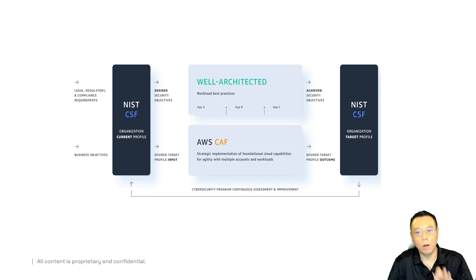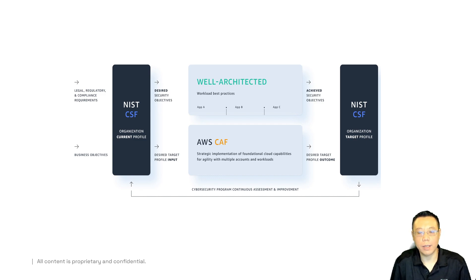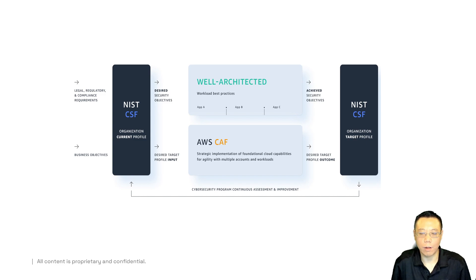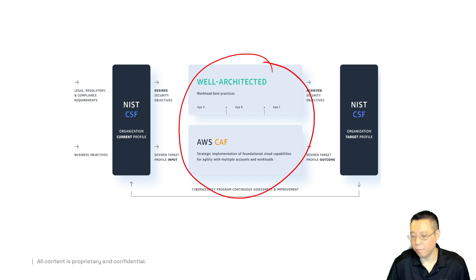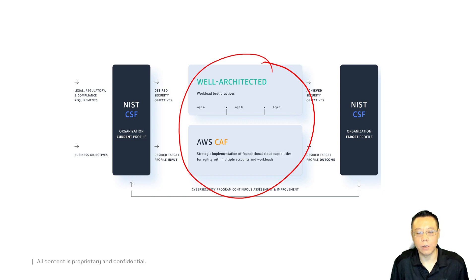If you overlay one framework with the other and you have controls that match up, you should utilize those controls so you can get continuous improvement and continuous integration of that model. Remember that there's always going to be overlap between the NIST CSF, the Well-Architected Framework, and the Cloud Adoption Framework. Every best practice is part of that, and remember security is always integral at every step of the process.